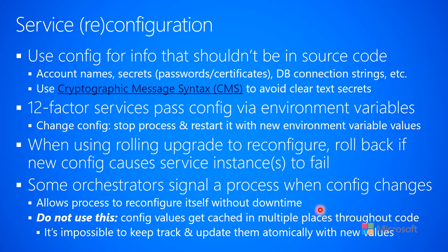When using a rolling upgrade to reconfigure, you might have to roll back if version 2 is experiencing problems. You might bring down whatever version is running just to change environment variables, then bring up the same version of code again but now reconfigured. It's possible that the new settings will cause the service to stop running properly. If you do a rollback, make sure it includes the previous configuration state, since you're only changing config, not the code version.